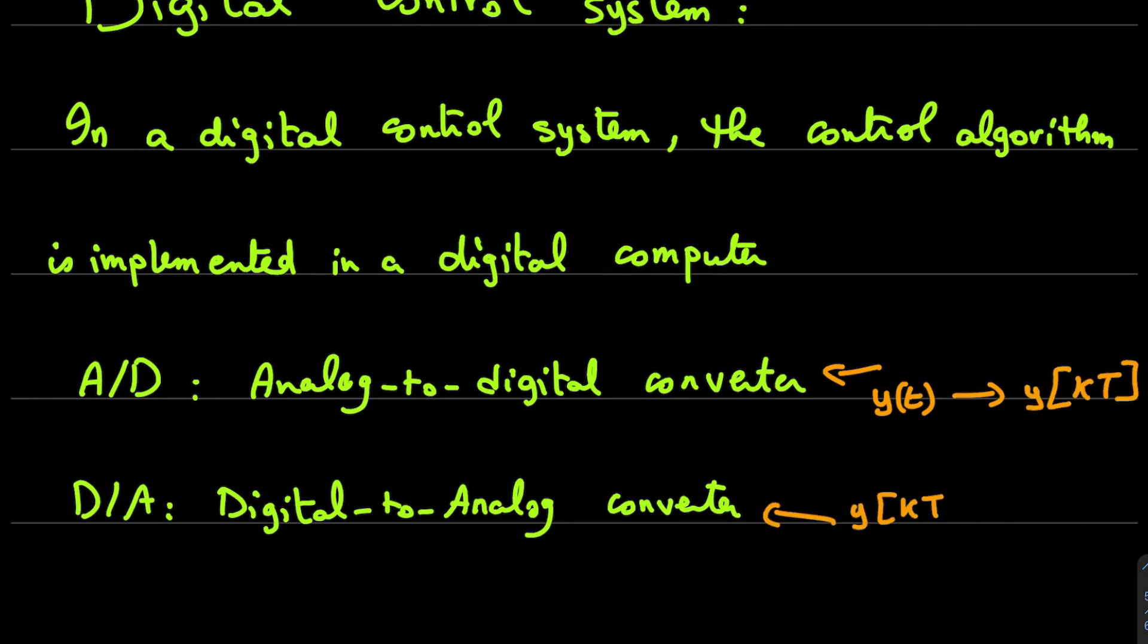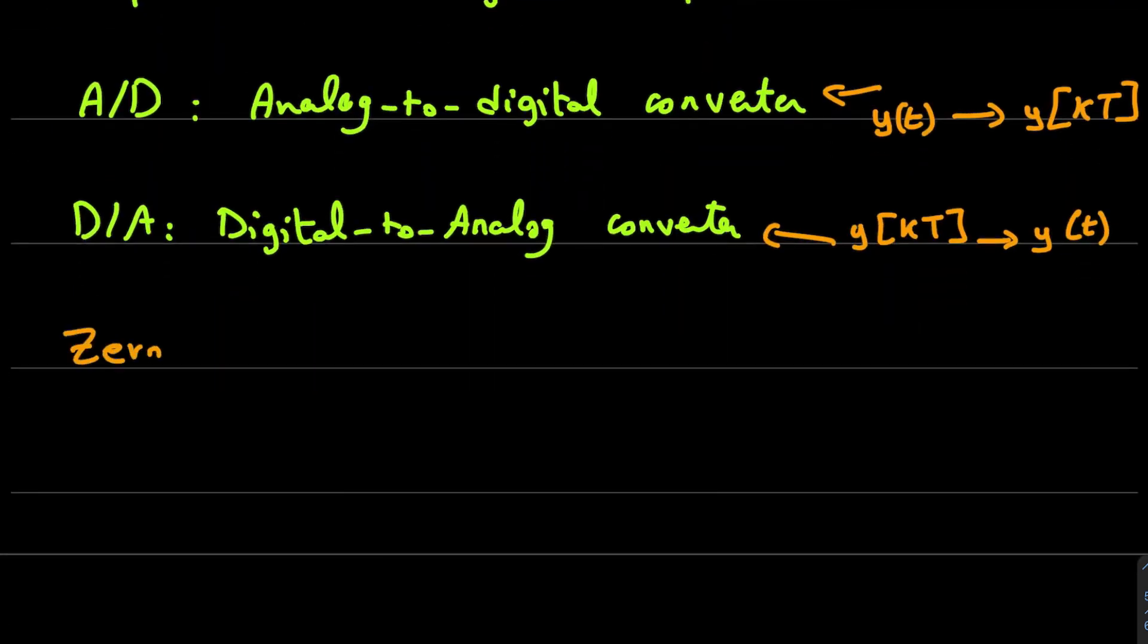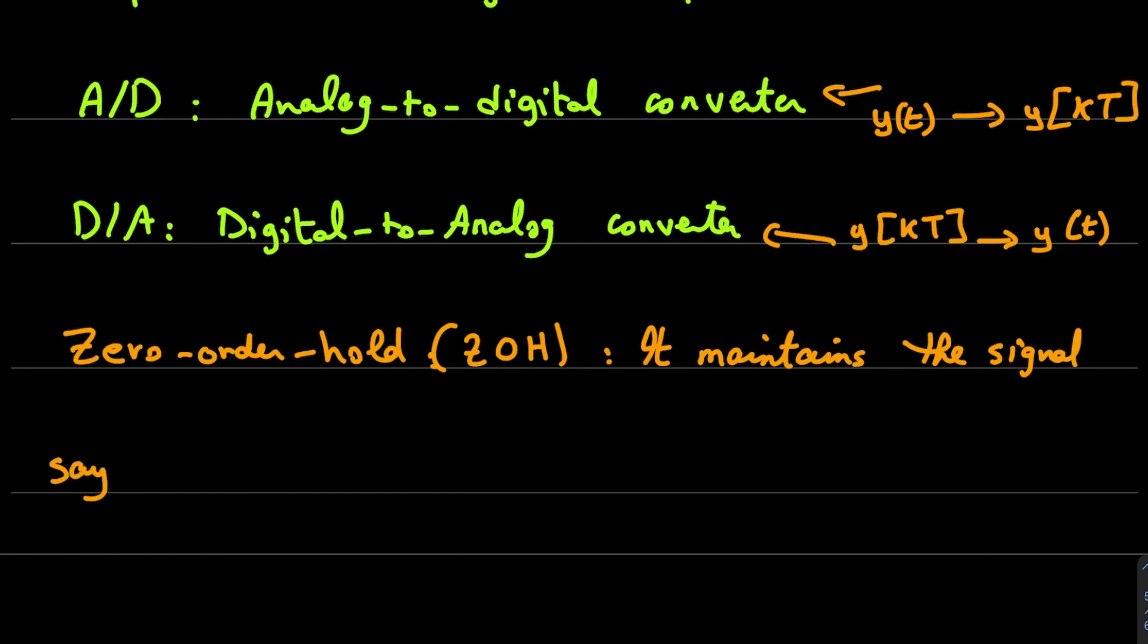We have analog-to-digital converter and digital-to-analog converter. The A/D converter discretizes the continuous signal, and the D/A converter transfers the discretized signal to a piecewise continuous signal, as we saw in the previous video.